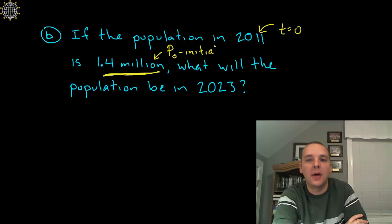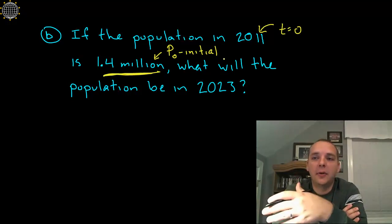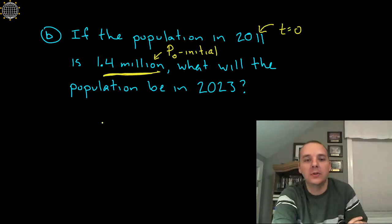Now as a little side note, this particular example we're working is for population growth, but this same idea would work for a financial problem, or any sort of exponential growth type of problem. Alright, so let's update that model then.